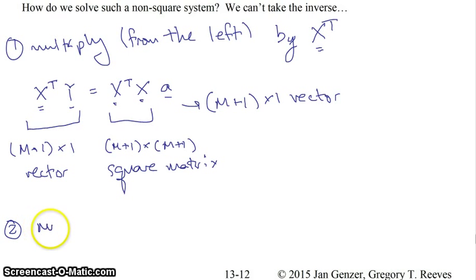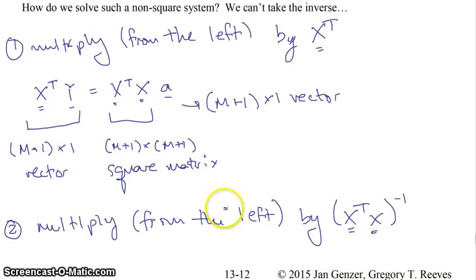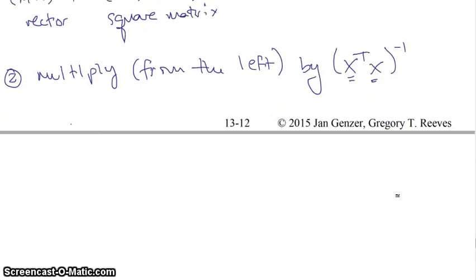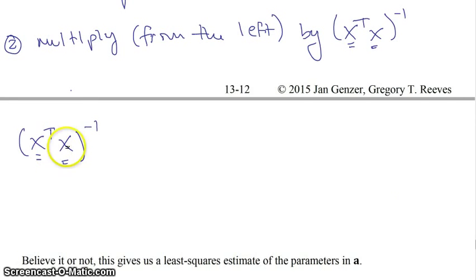And so we can take an inverse of the system. So what we're going to do next, step two, is multiply, again from the left, by x transpose x inverse. And when you do that, what you get is x transpose x inverse times x transpose times y is equal to, now I could write x transpose x inverse times x transpose x times A, but since the inverse is just cancelled out, what you get on the other side is just A.